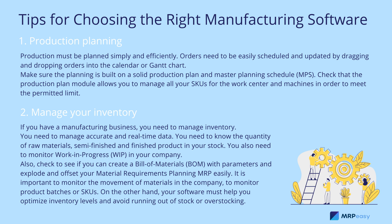One: production planning. Production must be planned simply and efficiently. Orders need to be easily scheduled and updated by dragging and dropping orders into the calendar or Gantt chart. Make sure the planning is built on a solid production plan and master planning schedule. Check that the production plan module allows you to manage all your SKUs for the work center and machines in order to meet the permitted limit.